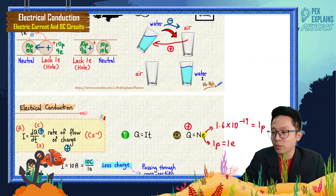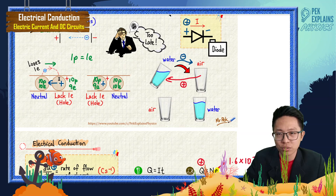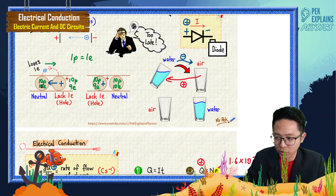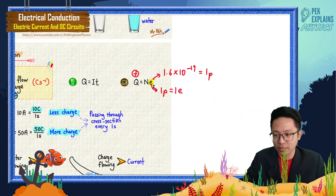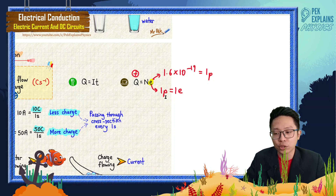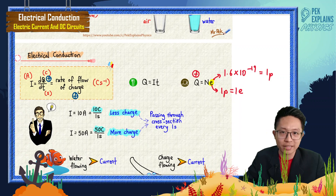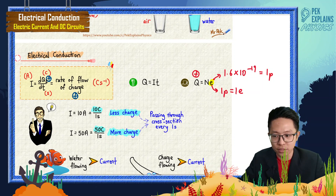When the electron flows, it seems like the proton flows in the opposite direction. The charge of one proton equals the charge of one electron, so in the formula we use the value 1.6 × 10⁻¹⁹ C — which is actually the charge of one proton, not the electron's negative charge. The charge in this formula represents positive charge following the conventional current idea. That is all for this video.